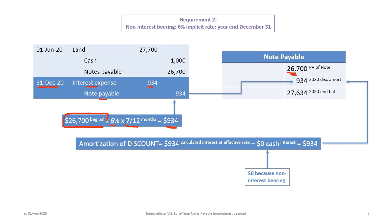The interest accrual is $934, so we debit interest expense and credit note payable for $934. This addition to the T-account represents the amortization of the discount. The amortization of the discount equals the calculated interest at the effective rate minus any cash interest paid. Since this is a non-interest bearing note, the entire interest expense amount is also the full discount amortized. At the end of 2020, the value of the note has built up to $27,634.